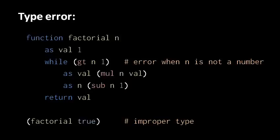Arguably, the real type error here is when we called factorial in the first place with something other than a number. The problem is that in Pidgin, because it's what's called a dynamic language, you can pass any kind of value to any parameter of any function — it doesn't check whether it's the right type or not.